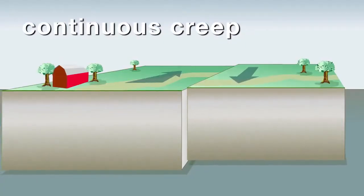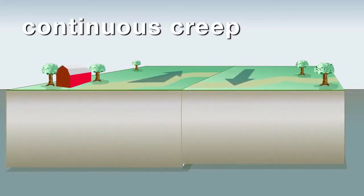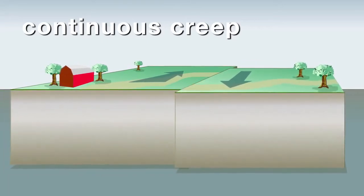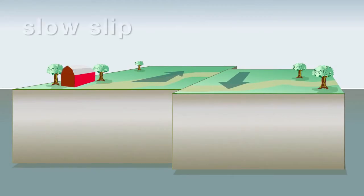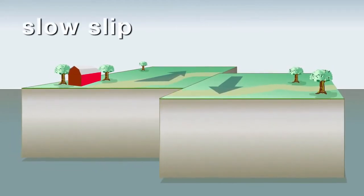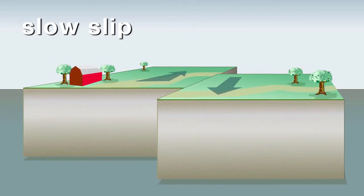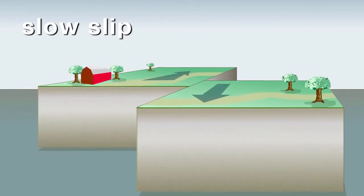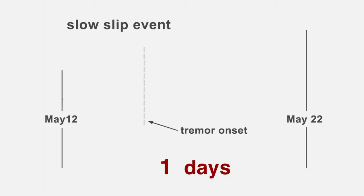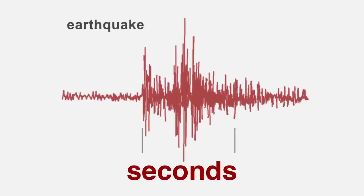We also observe two different other types of behavior. We observe continuous creep, where the fault is always moving, and we also observe this type of behavior that's called slow slip. Slow slip is when you have movement along the fault that occurs over weeks to months to years depending on where you're at in the world, and it moves at a much slower rate than traditional earthquakes.